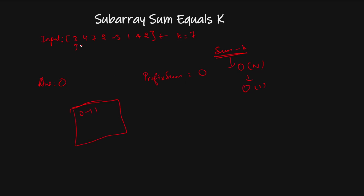Starting the traversal: we add the current element to our prefix sum and check if (sum minus k) exists in the map. For example, with prefix sum 3 and k=7, we check for 3 minus 7 = -4, which is not in the map. We then store the current prefix sum 3 with count 1 in the map.